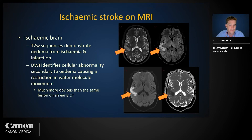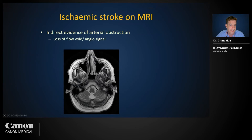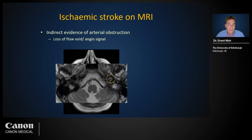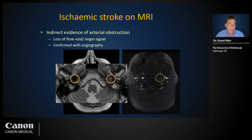Much like the dense artery sign on CT, MRI can also provide indirect evidence of arterial obstruction through loss of normal arterial flow voids. Moving blood does not normally return signal and appears black, whereas stationary blood clot does return signal and looks more like other tissues. Note the lack of the left internal carotid artery flow void on this image — this obstruction was then confirmed with MR angiography.